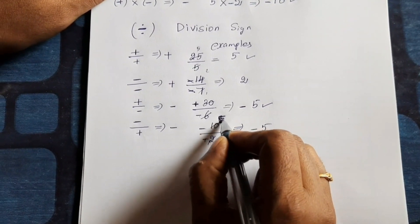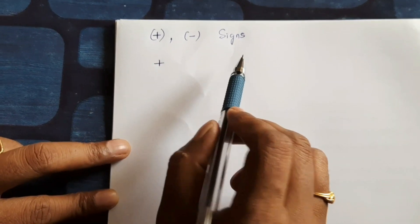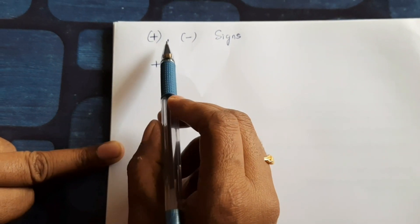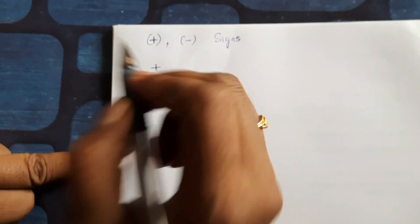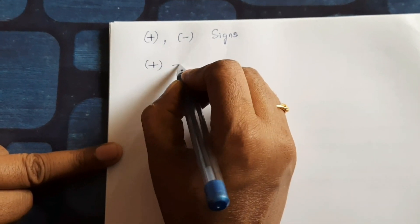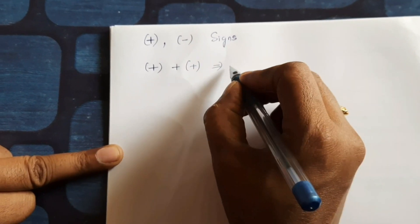Students, this is very, very, very important concept. Students making more mistakes here. So plus and minus sign. Here first plus and plus, plus plus equal to plus.